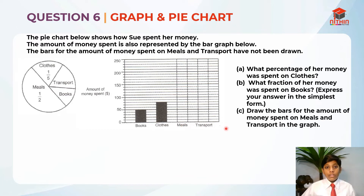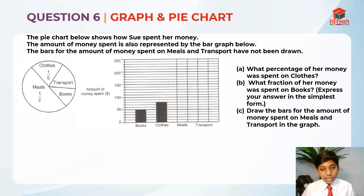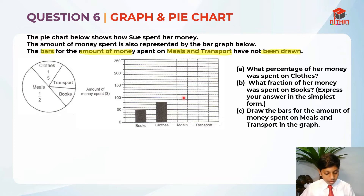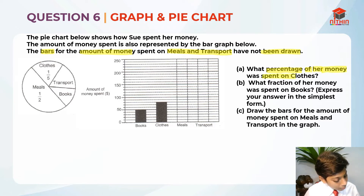We are going to do Part A first. Part A asks: what percentage of her money was spent on clothes? Now that we've read the question, let's highlight the key information. The important detail is that the bars for the amount of money spent on meals and transport are not drawn. For Part A, they are asking us what percentage of her money was spent on clothes.